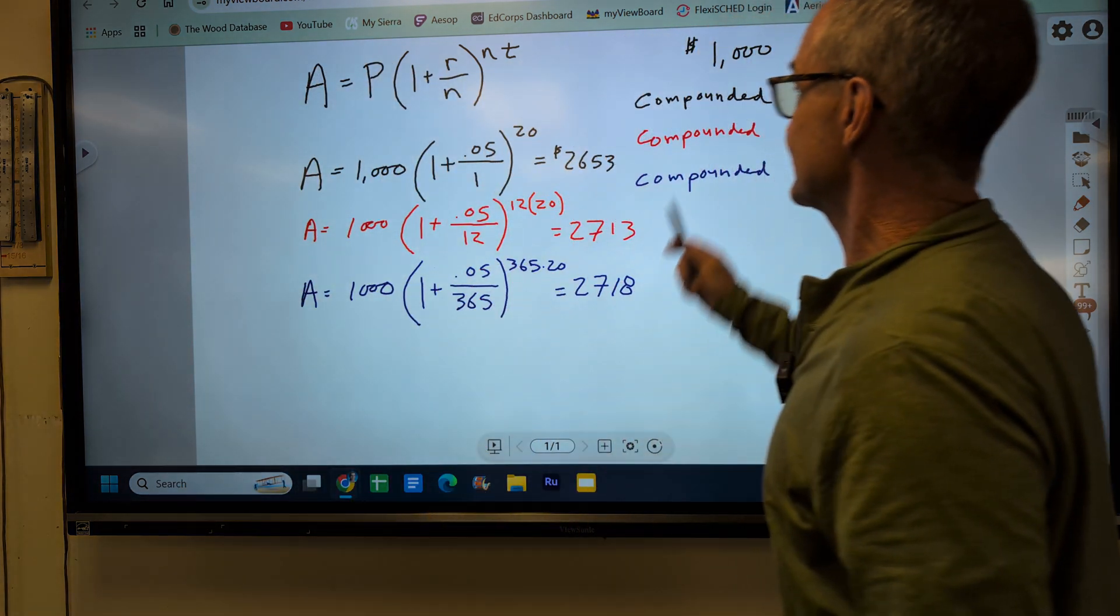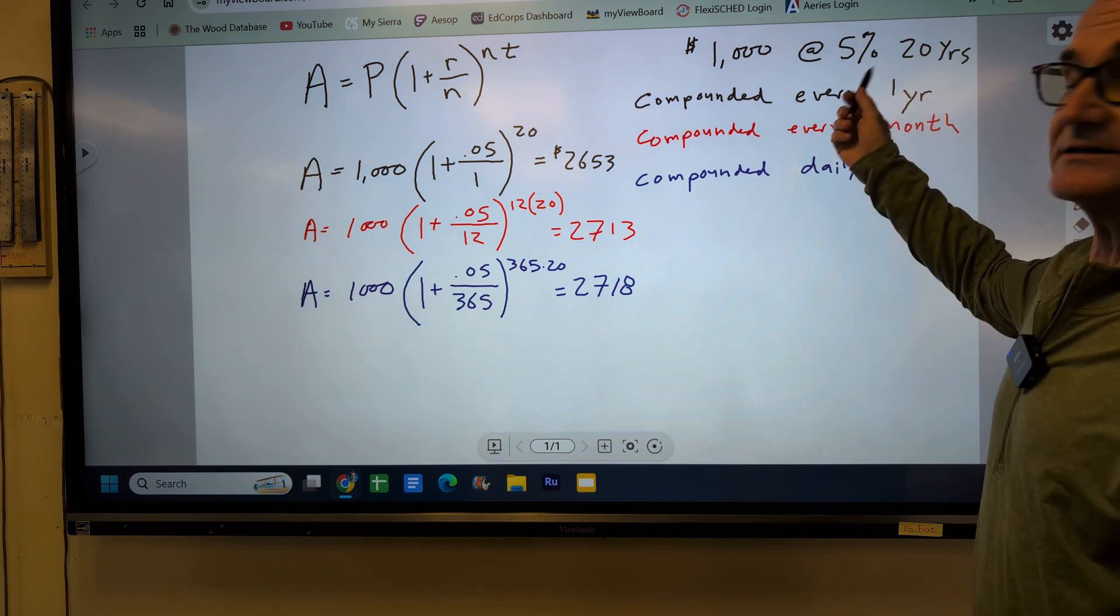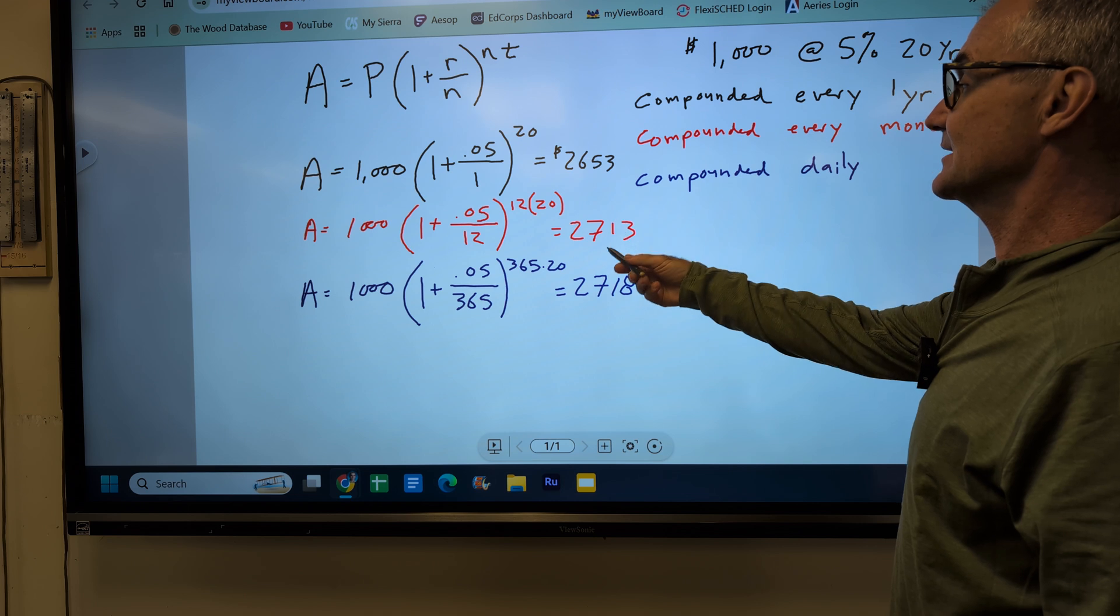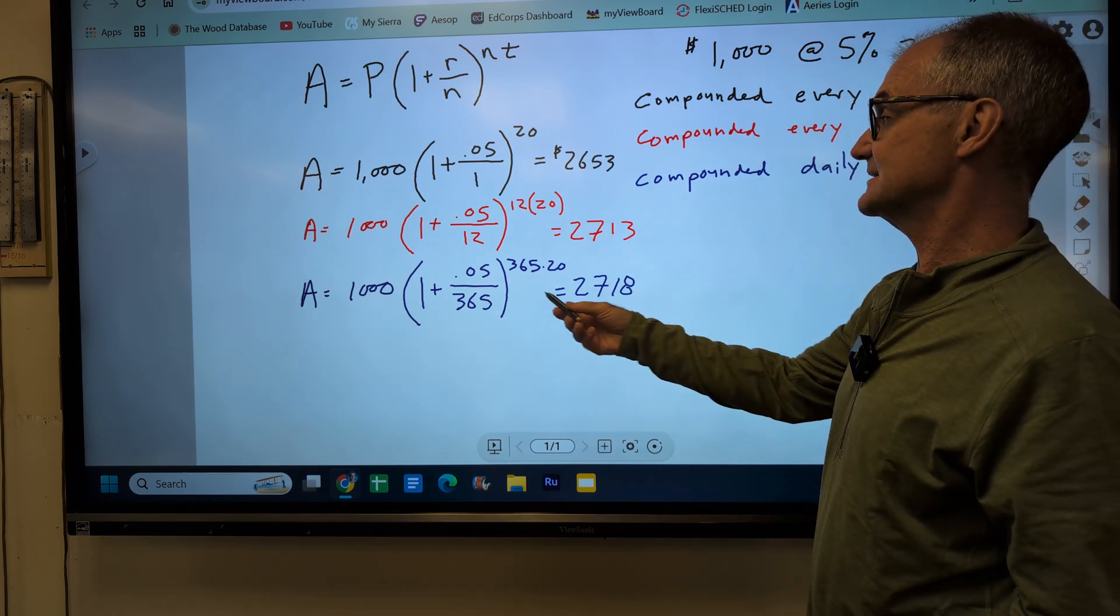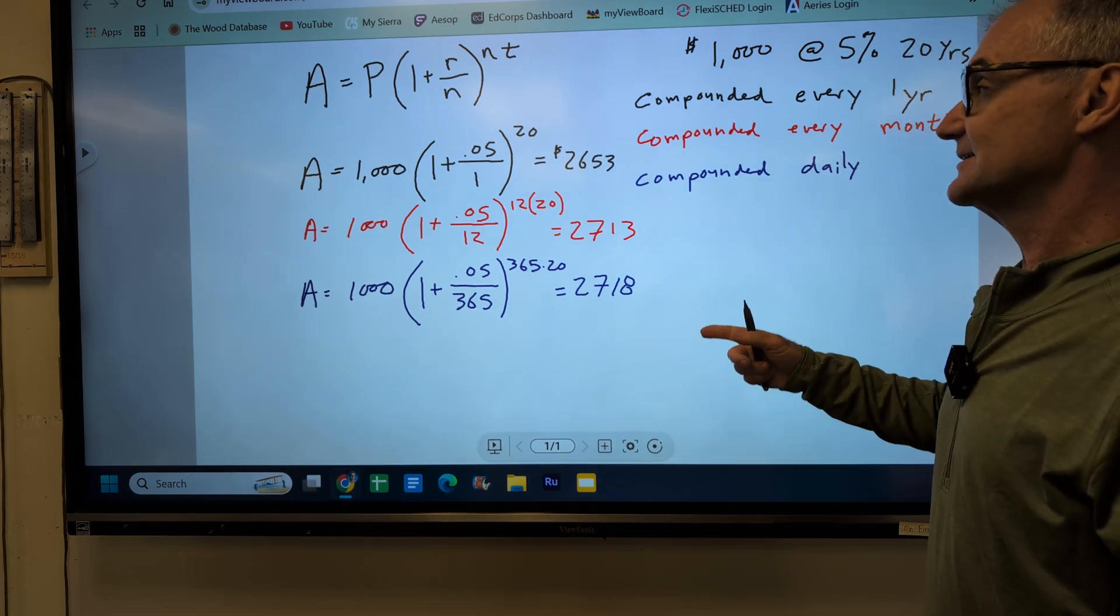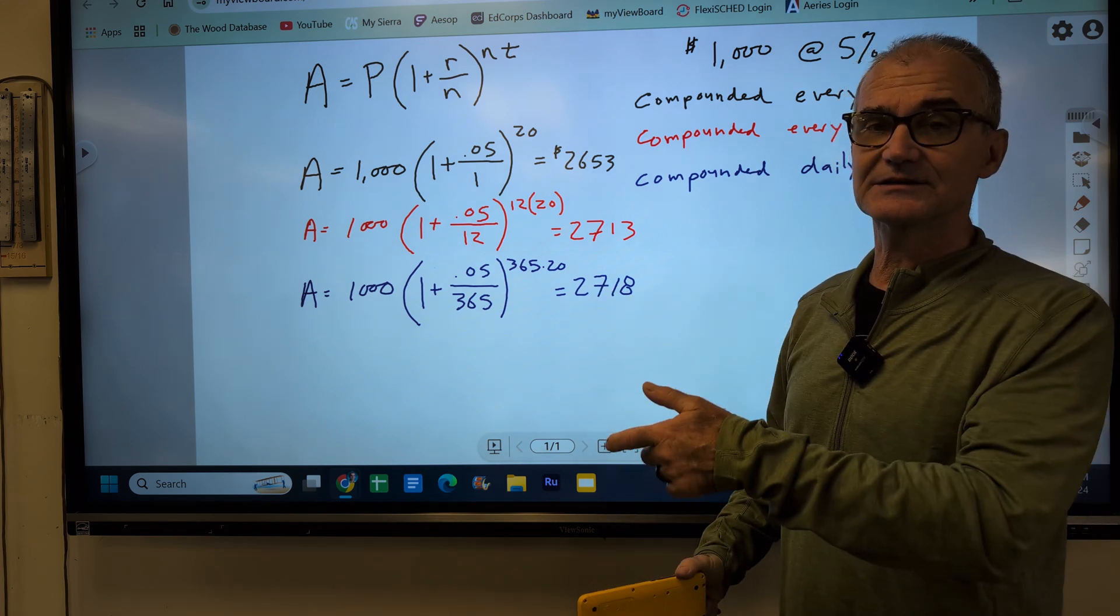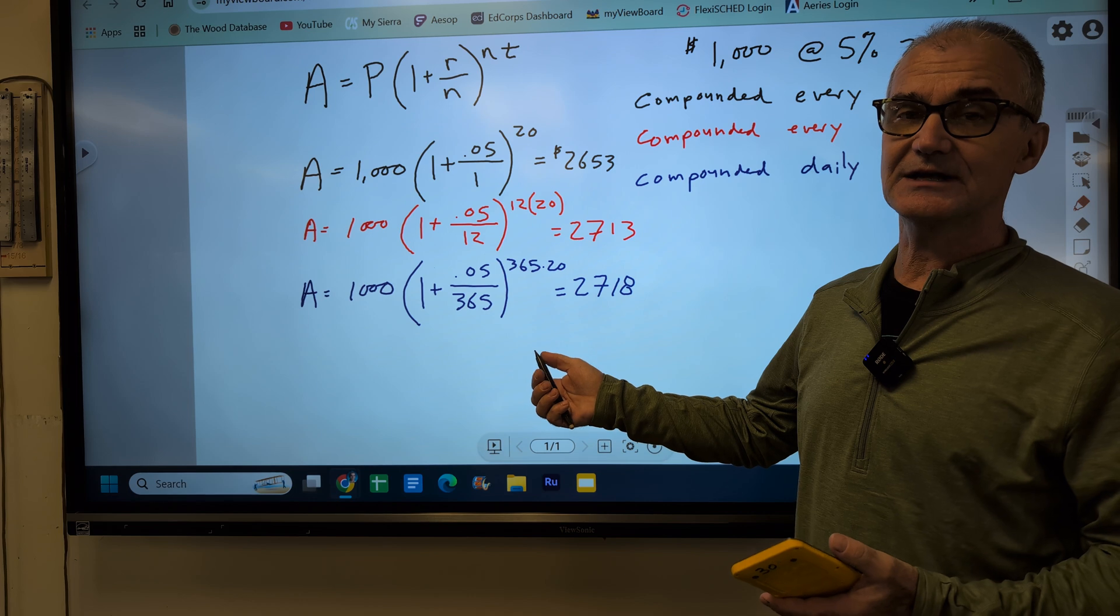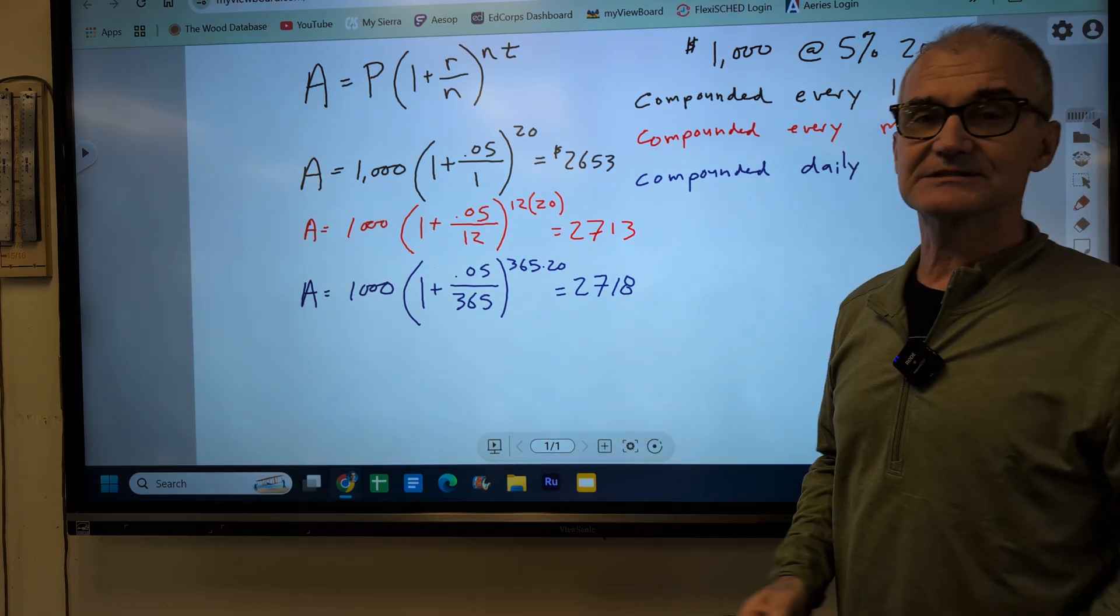So if I put $1,000 in the bank at 5% interest for 20 years, if it is compounded annually, it'll be 2,600. If it is compounded monthly, it'll be 2,700. And if it's compounded daily, it'll go up about five bucks. The key, though, is that if you're borrowing money, this compound really hurts a lot because they compound it continuously. Or if you're earning money, it really helps you a lot. So that's how we do compounded interest over different periods of time.